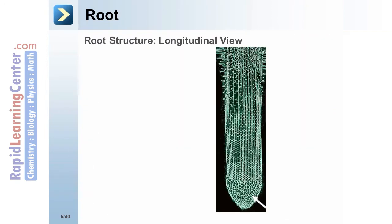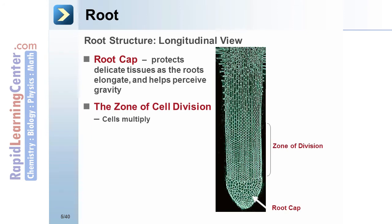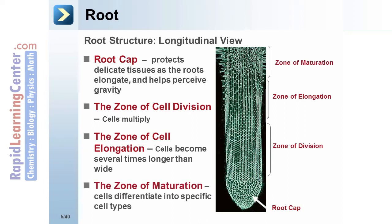Root structure in longitudinal view: the root cap protects the delicate tissues as the root elongates and helps perceive gravity. The zone of cell division is where cells actually multiply. The zone of cell elongation is where cells become several times longer than wide. The zone of maturation is where cells differentiate into specific cell types.